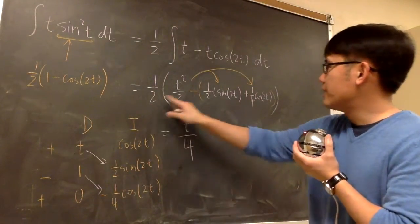And then we have to do 1 half times this. And that's minus. So it's minus 1 over 4t sine of 2t. Lastly, we have 1 half times negative times positive 1 fourth. So it becomes minus 1 over 8 cosine of 2t. And we are done. So put plus c right here.